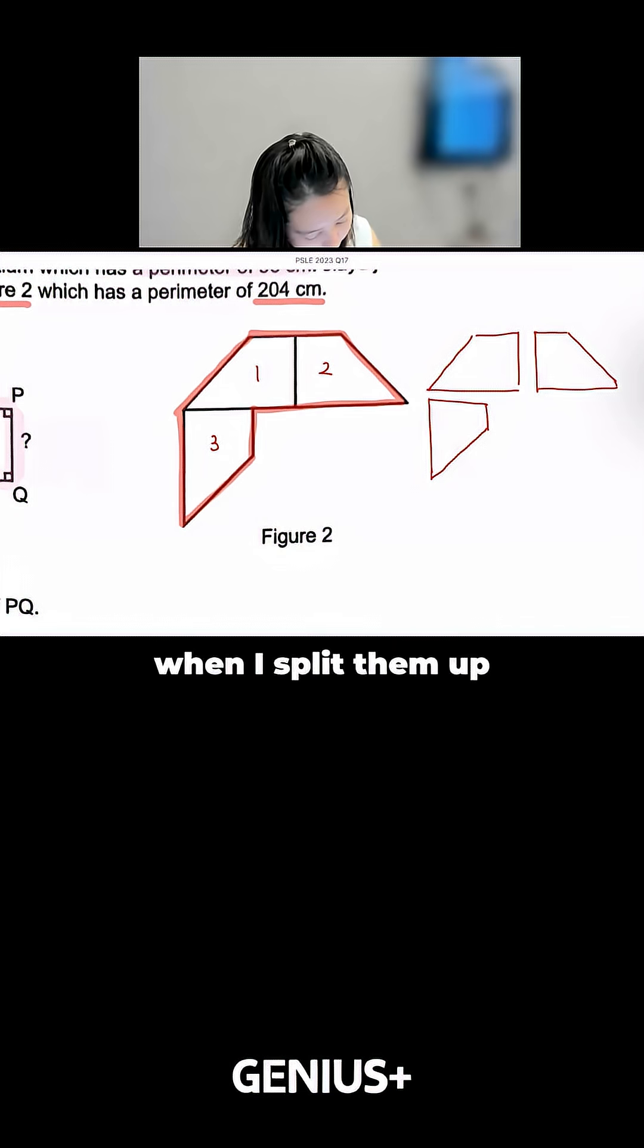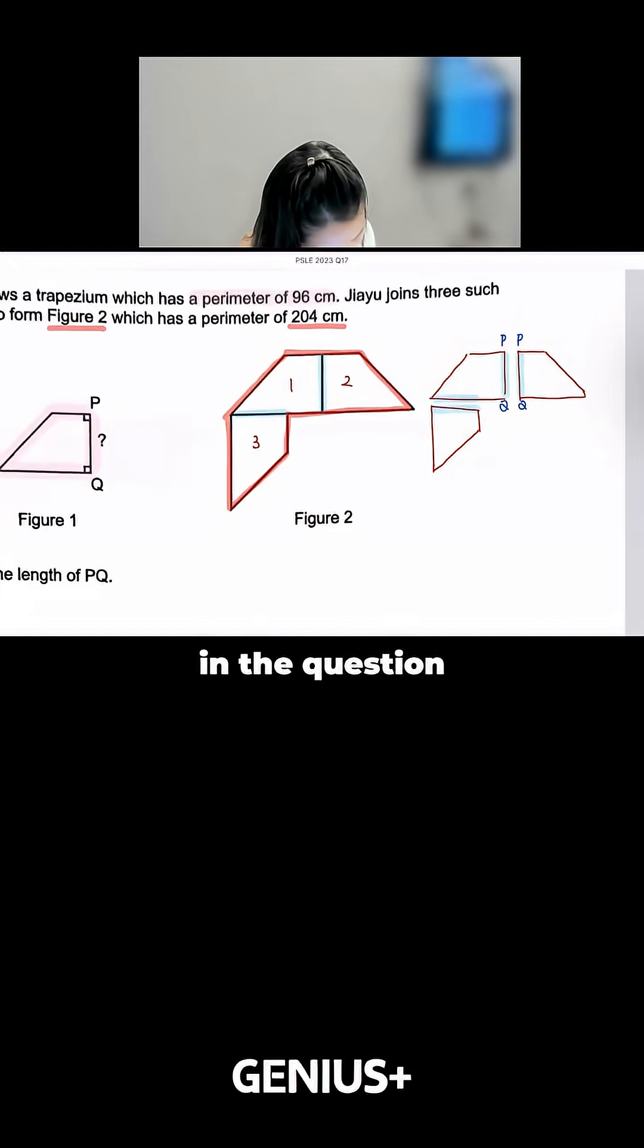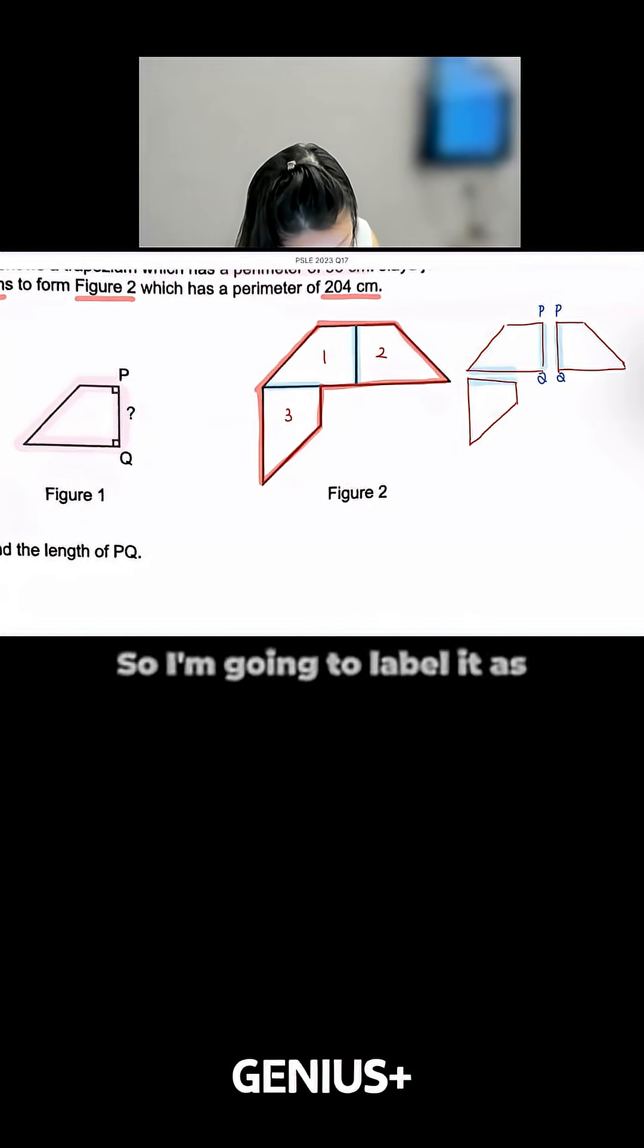You notice that when I split them up, you will see that these lines are shown here. It is exposed now. So this is what we define as PQ because earlier in the question, you can see that the unknown is actually this PQ. So I'm going to label it as PQ and PQ.